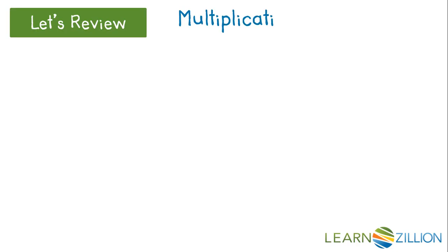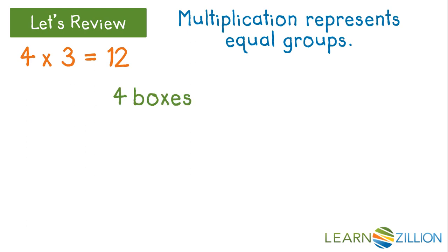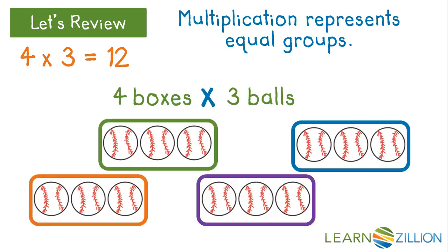You know that a multiplication equation shows equal groups. For example, four times three equals twelve could be four boxes with three softballs in each box. That would be twelve softballs.